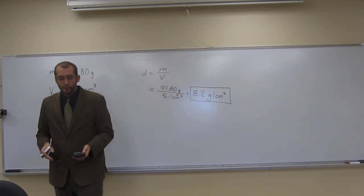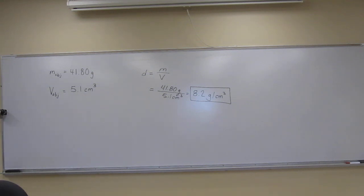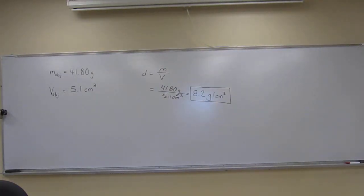So that's how to figure out what the density of an irregularly shaped object is and actually doing it in the laboratory. Any questions on that stuff? Pretty straightforward.